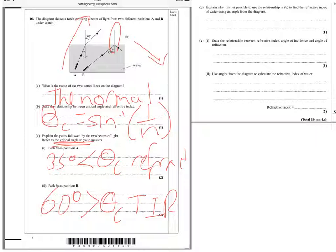Part D. Explain why it's not possible to use the relationship in part B, theta C equals sine to the minus 1 of 1 over n, to find the refractive index of the water using an angle from the diagram. Well, this relationship only works at that important critical angle.